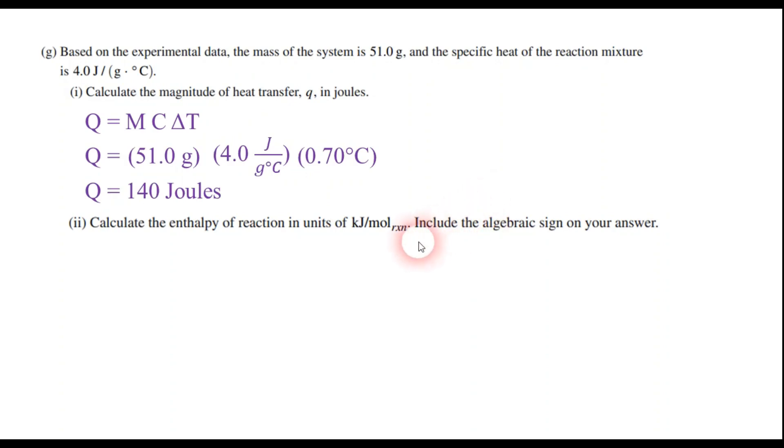Now on G2, it says calculate the enthalpy of reaction in units of kilojoules per mole of reaction and include the algebraic sign. Now kilojoules per mole, we've just worked with the joules here. So let's work on the moles part of this. The problem in the header said it was one gram of calcium carbonate that was reacting. So we need to figure out how many moles we had reacted. So once again, 100.09 grams on the bottom and one mole on top. And that tells us we have about 9.99 times 10 to the negative third moles of calcium carbonate.